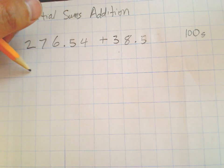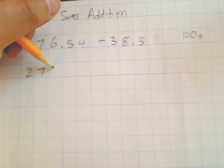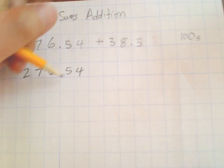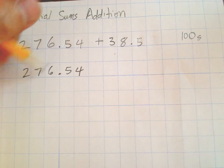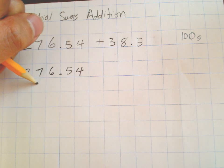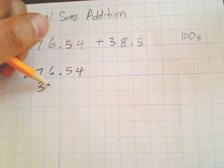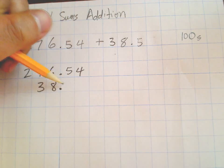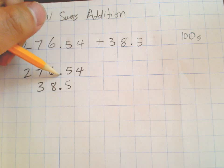So what I want to do is I'm going to rewrite this problem with all of my place values lined up. So we talk about the cardinal rule about adding and subtracting decimals: make sure that your place values are lined up, and you can do that easily by using that decimal point to see how to line up.